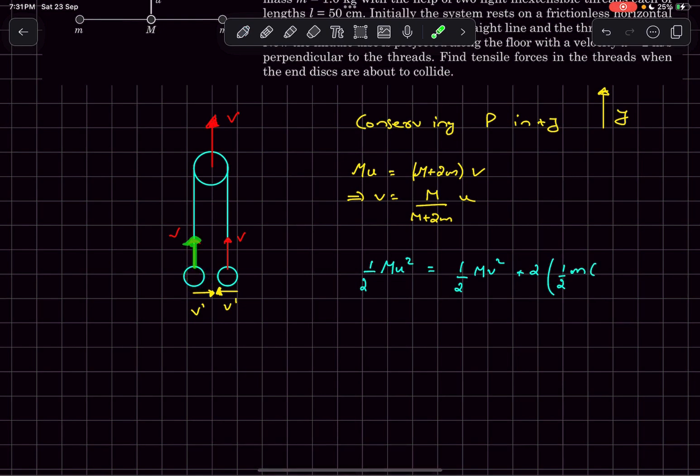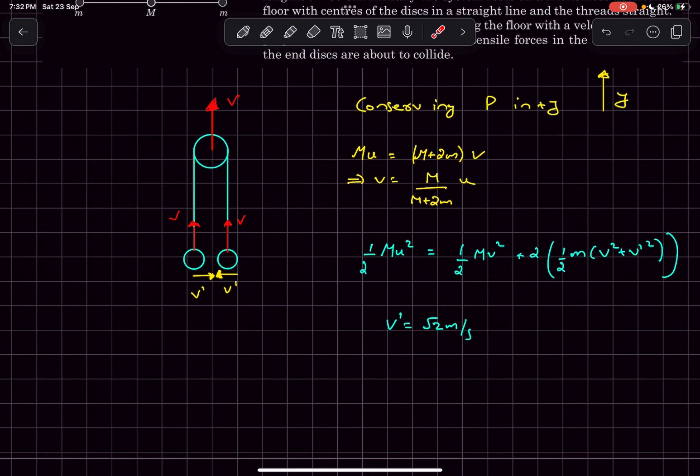The speed of the smaller mass is going to be the square root of v squared plus v dash squared. Now we know all the values and we can solve for v dash. After solving for v dash you'll get the value of v dash as root 2 meters per second.